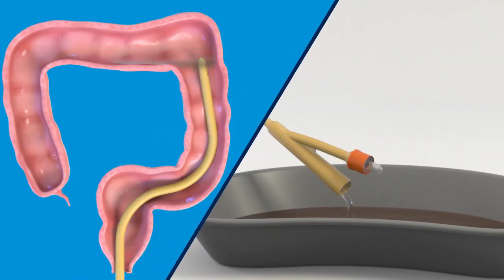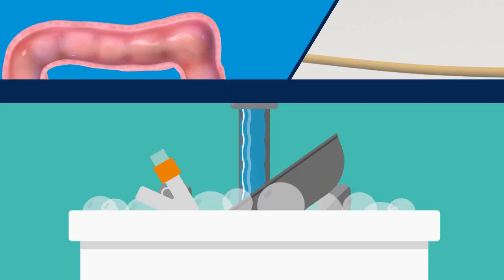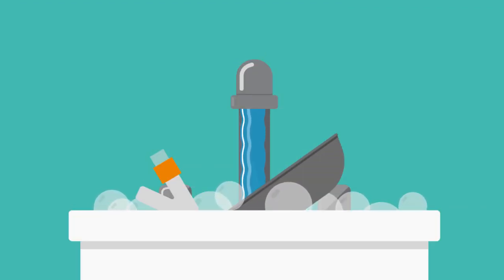Once the drained fluid is clear, remove the catheter from the rectum and wash your supplies with soap and water, then set out to dry. The supplies are reusable.